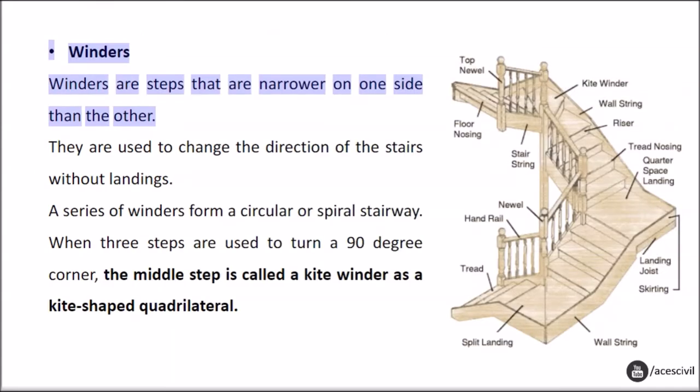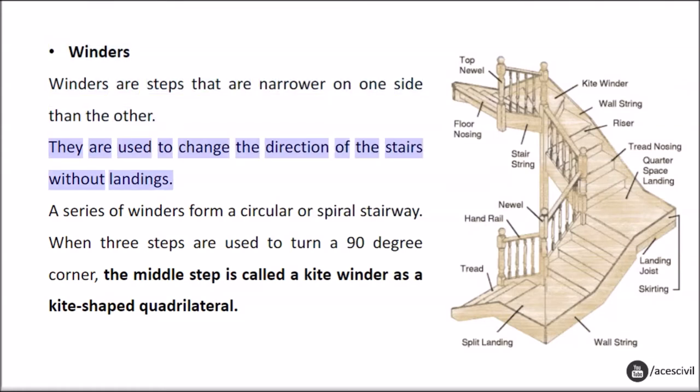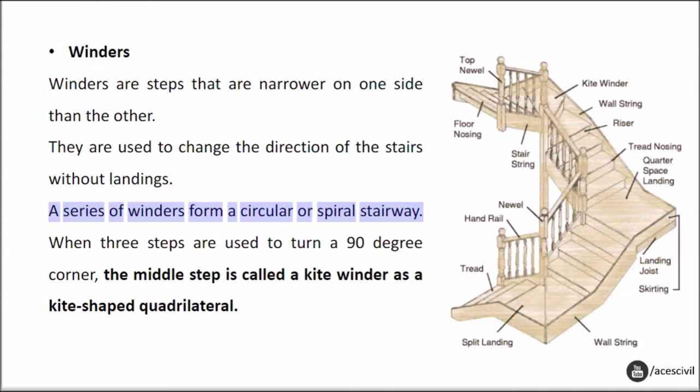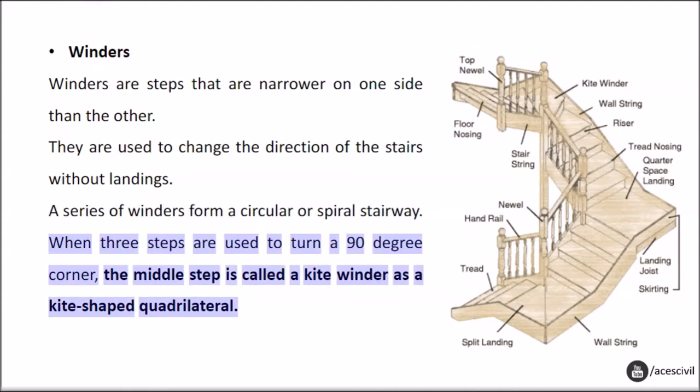Winders are steps that are narrower on one side than the other. They are used to change the direction of the stairs without landings. A series of winders form a circular or spiral stairway. When three steps are used to turn a 90-degree corner, the middle step is called a kite winder, as it forms a kite-shaped quadrilateral.